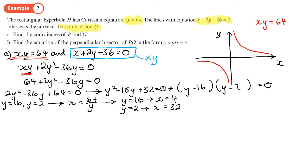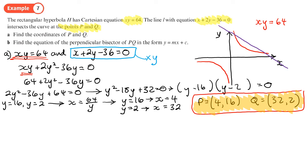We don't know which one is which, so let me call P the one at the top, (4, 16), and Q will be (32, 2). Notice that I've actually got two coordinates here which are both positive, which actually means that this line L intersects at the top in this first quadrant.